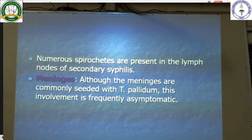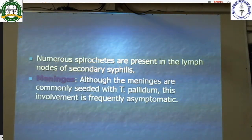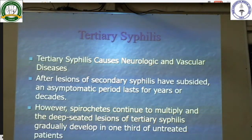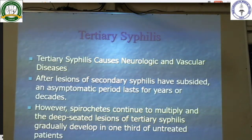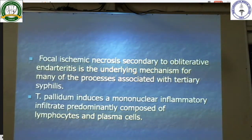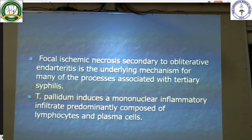Numerous spirochetes are present in the lymph nodes of secondary syphilis. In the meninges, although the meninges are commonly seeded by Treponema pallidum, this involvement is frequently asymptomatic. Tertiary syphilis causes neurologic and vascular disease. After lesions of secondary syphilis have subsided, an asymptomatic period lasts for years or decades. However, spirochetes continue to multiply and the deep-seated lesions of tertiary syphilis gradually develop in one-third of untreated patients. Focal ischemic necrosis secondary to obliterative endarteritis is the underlying mechanism for many processes associated with tertiary syphilis.